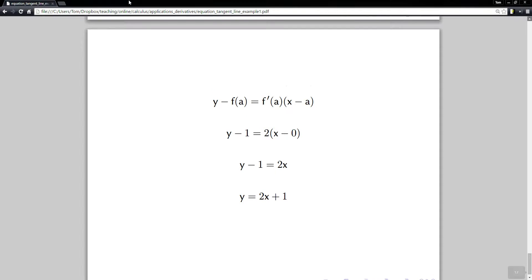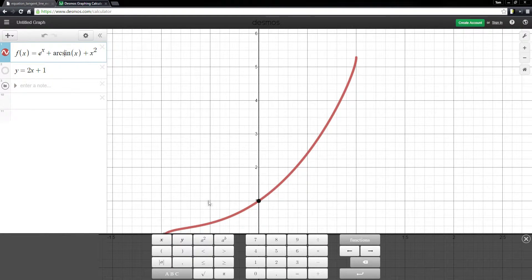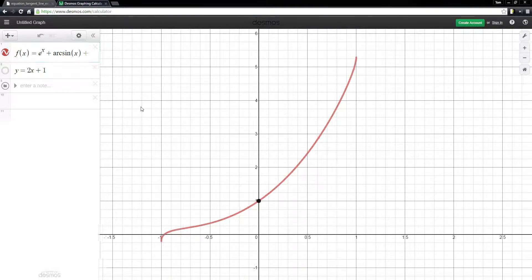And then, I have a picture. Maybe this will work. If I can get this tab over here. All right. So there's the graph in red. That's the graph of e^x + inverse sine + x^2. It looks like that.